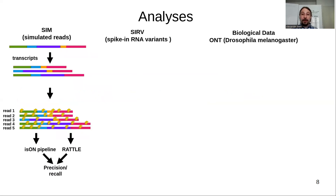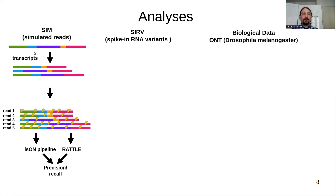Our analysis includes a simulated pipeline, a SERF analysis pipeline, and a biological data pipeline. For the simulated pipeline, we simulate a sequence with a random sequence of characters A, C, T, G, then chop this sequence into short sub-sequences representing exons. We generate different combinations of those sub-sequences as transcripts, then generate reads from those transcripts by adding errors. We then run the ISON pipeline as well as the RATTLE pipeline to get our precision-recall values.